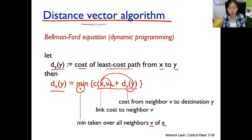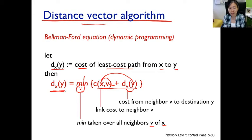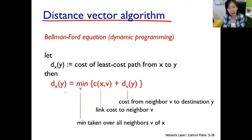We go over all neighbors, calculate the sum for each, and pick the neighbor that gives the minimum value. That minimum value is the minimum cost from x to y, and that neighbor v is the next hop along the shortest path to the destination. This equation is known as the Bellman-Ford equation, because this algorithm implementing distance vector routing was devised by these two great contributors.